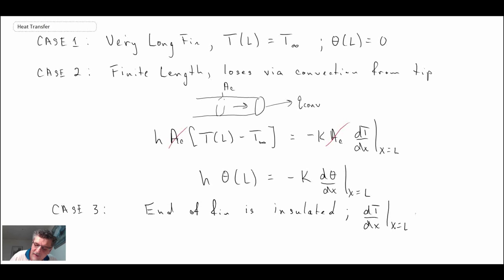If the tip is insulated, when we look at the boundary conditions—we looked at this when we came up with the heat diffusion equation—if we have a case of insulation, through Fourier's law, the slope of the temperature profile at that point is equal to zero. Therefore, writing that in terms of our variable theta, we get that.